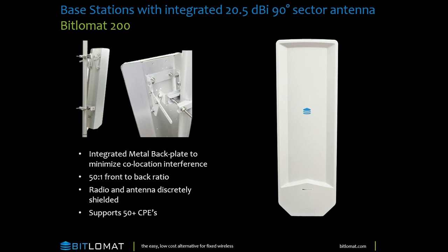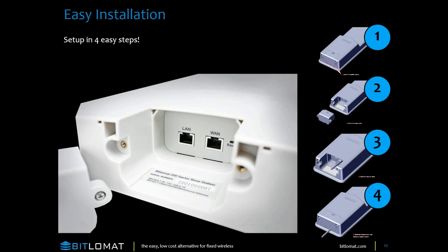The Bitlamat 200 — the fit and finish is terrific. The metal back plate is designed for the antenna and the enclosure and is extremely efficient, with a 50-to-1 front-to-back ratio. It supports really 30 to 50 CPEs as the sweet spot for the access point. You could probably go a little higher in a particular application, but we're really hanging our hat on 30 to 50. Easy installation — you don't have to bolt a radio onto it. It's a nice two screws, put the Ethernet cable in, pop the cover back on, and bolt it onto whatever you're bolting it onto.